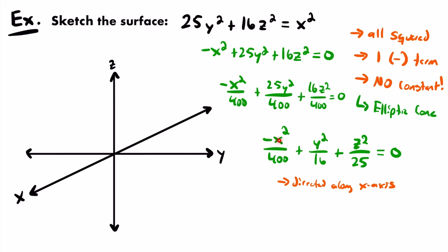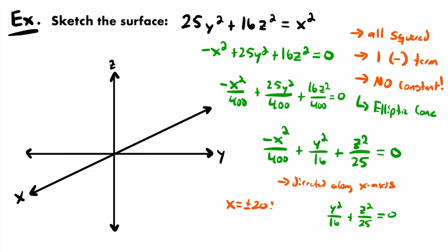When x = ±20, we get: -400/400 + y²/16 + z²/25 = 0, which simplifies to y²/16 + z²/25 = 1. That is the equation of an ellipse in a plane parallel to the yz-plane, with y-intercepts of ±4 (square root of 16) and z-intercepts of ±5 (square root of 25). These intercepts represent the distance in the y and z directions from the center of the projected yz-plane at x = ±20.